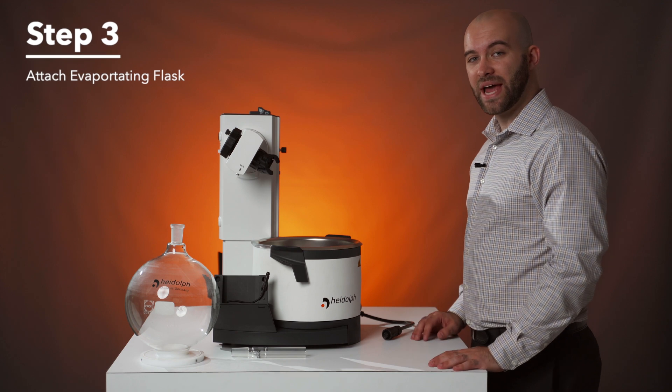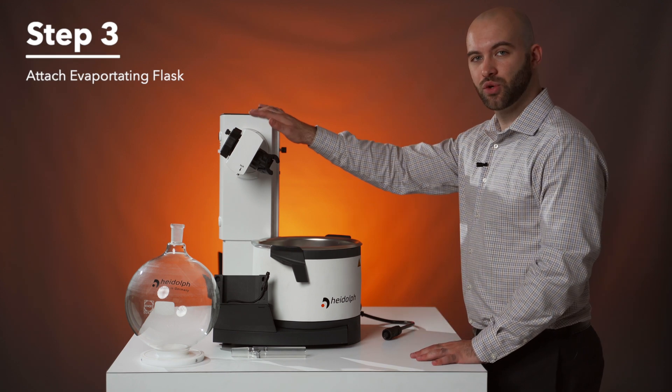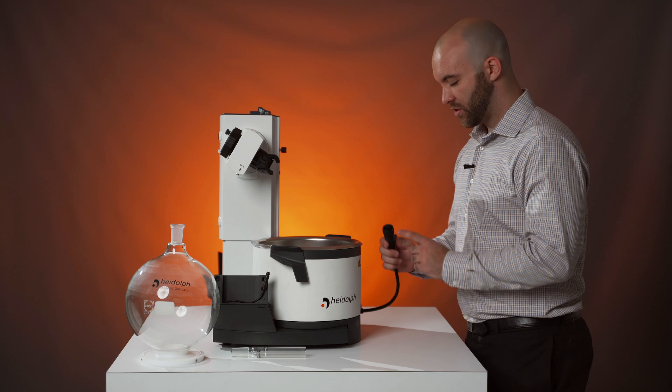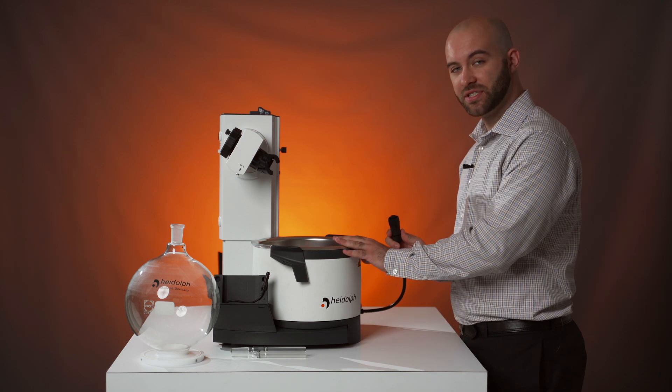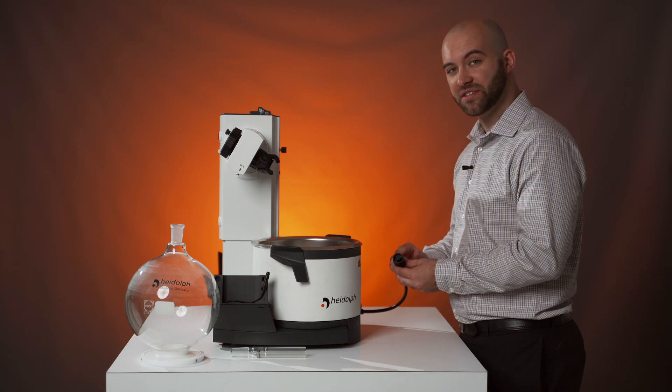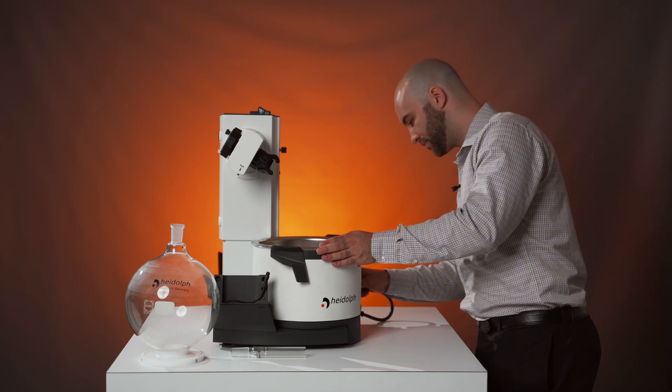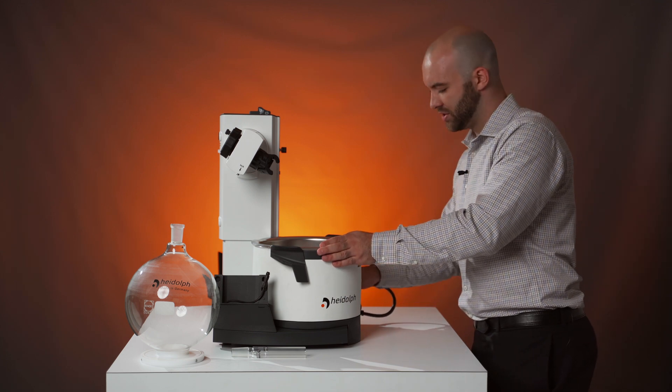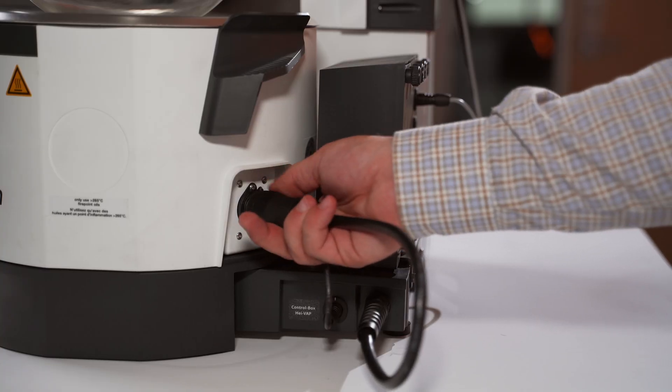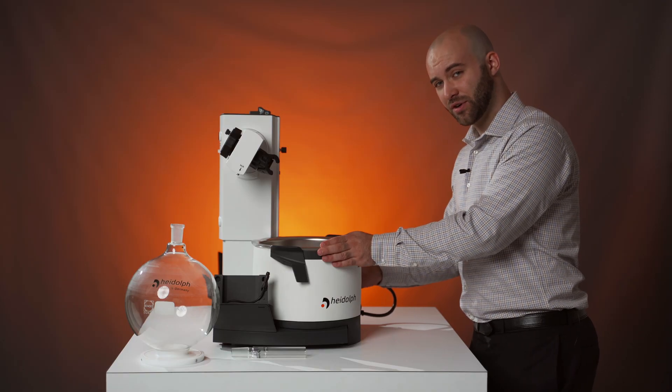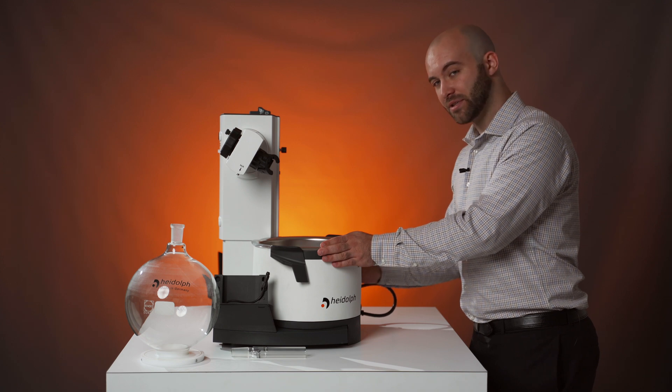Step three, we're going to add the evaporation flask to our HiVap. While we're here though, we're going to first attach the HiVap itself to the heating bath using this IP67 screwing cable. It slots right in the back here, lines with notches, and can be screwed on fairly easily. That is so at any time you can remove the bath for filling and emptying.